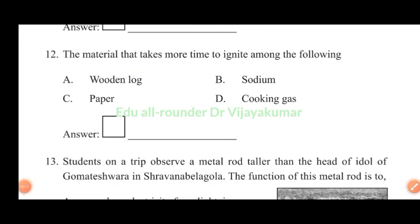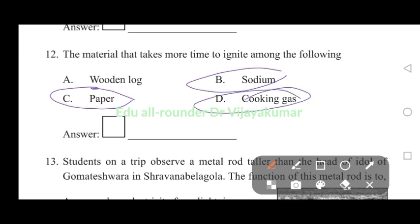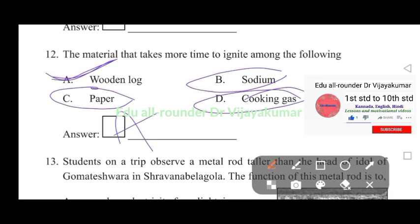The material that takes more time to ignite among the following: wooden log, sodium, paper, cooking gas. Wooden log will take more time compared to these. Therefore answer is A, wooden log.